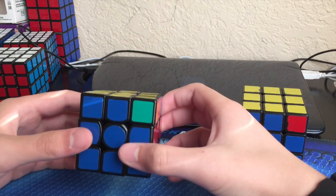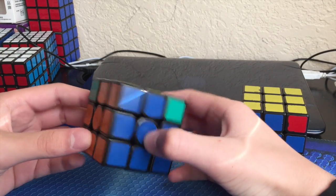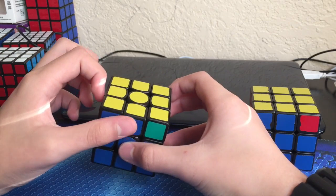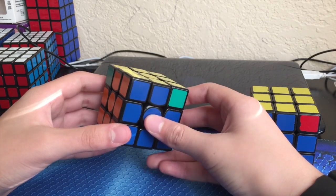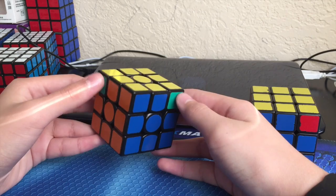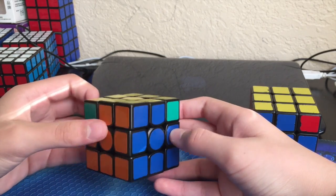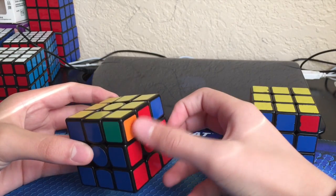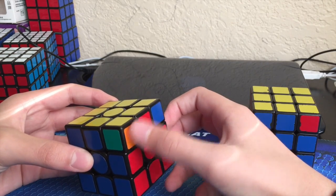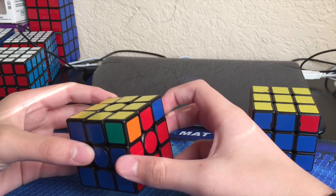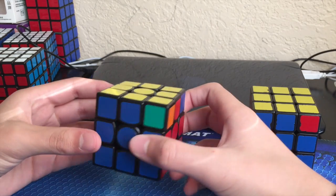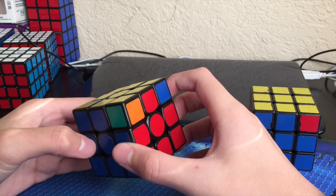To recognize the first A-perm, you'll have your solved block of course, and then you've got these two corners that have the same color. When you look to the right, you'll see these two corners are not matching in any way. This is how you know you have the first A-perm.